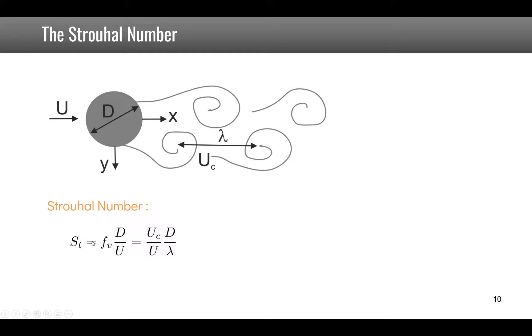Now if we want to rewrite this equation you have St equal fv times d over U and we know that the frequency of the vortices is related to the speed of the flow in the vortices and the wavelength through the well-known relationship uc is equal to lambda times fv.